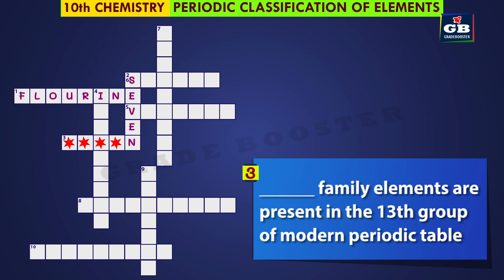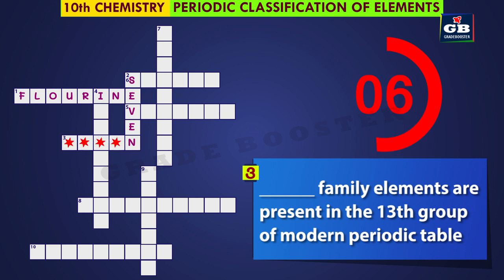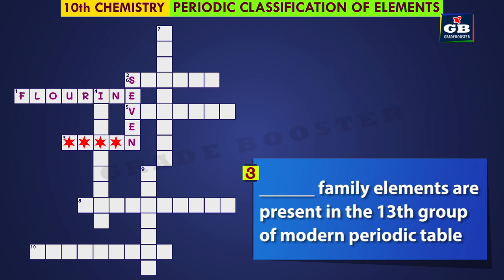Third across: dash family elements are present in the 13th group of the modern periodic table. The answer is Boron. Boron family elements are present in the 13th group of the modern periodic table.